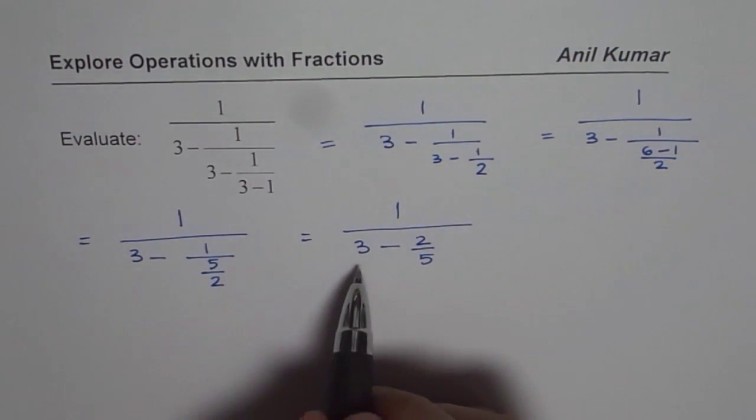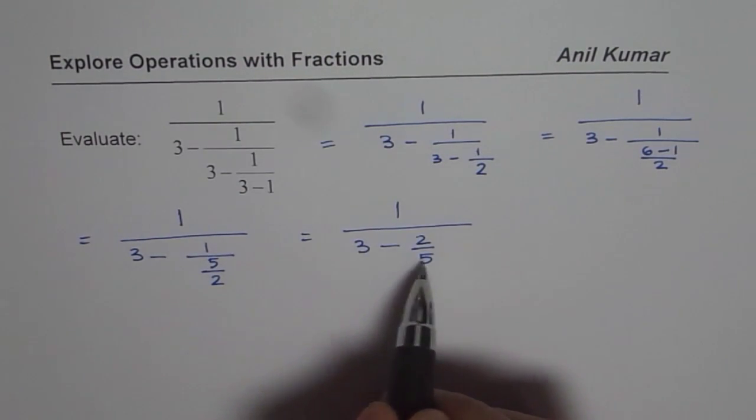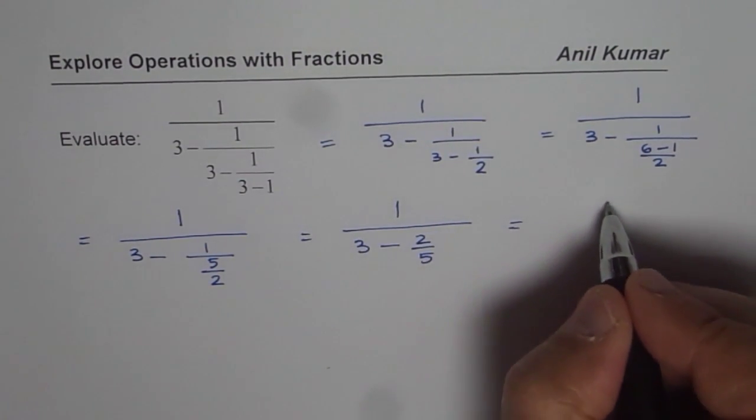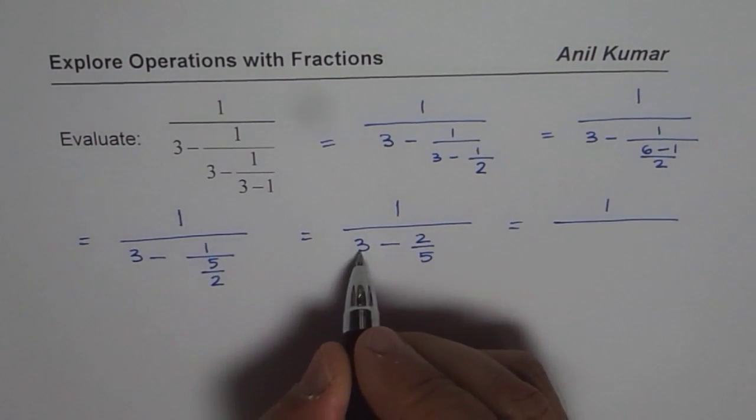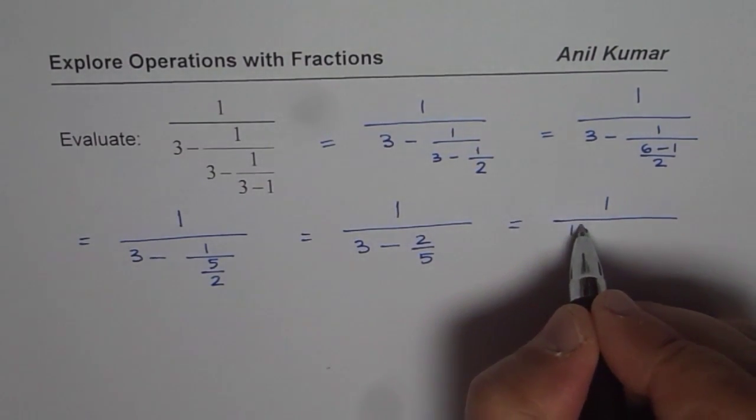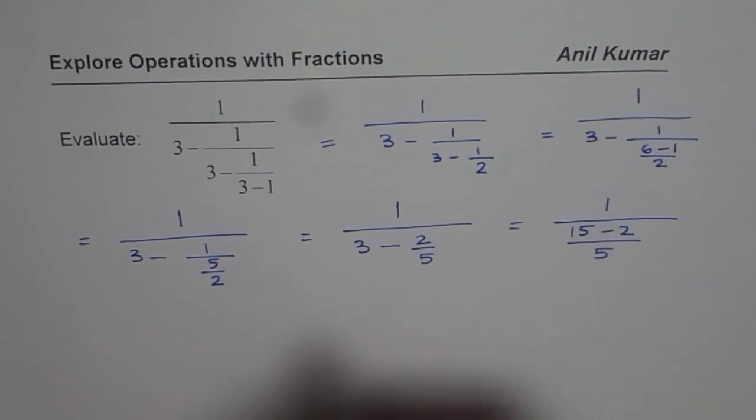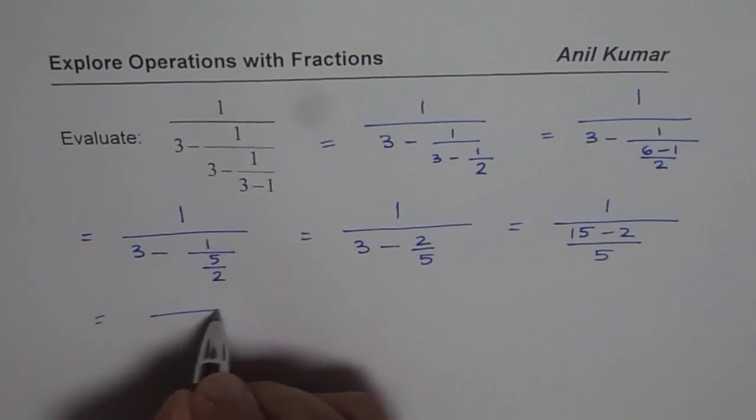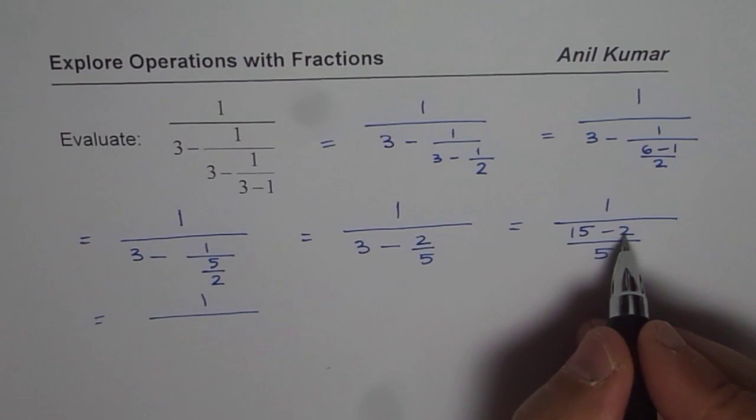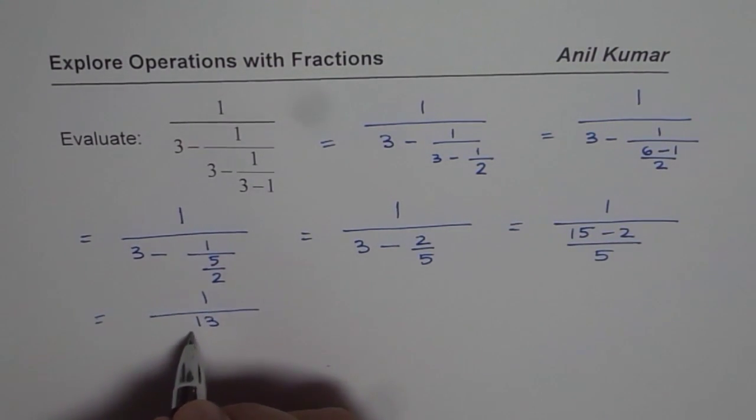So we get here 3 minus 2 over 5. Again, we will do the same thing. Common denominator of 5. That means we have to multiply and divide 3 by 5. So this time we get 1 over 3 times 5 is 15, 15 minus 2 over 5.